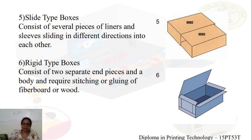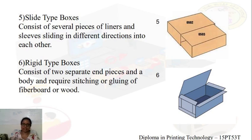Rigid type boxes consist of two separate ends and a body that requires stitching or gluing of fiber board, or they can also be made of wood.